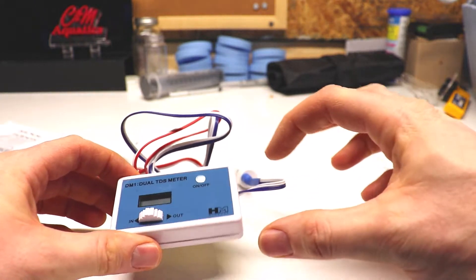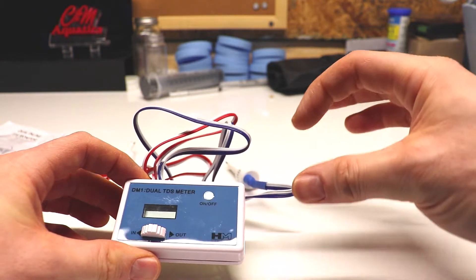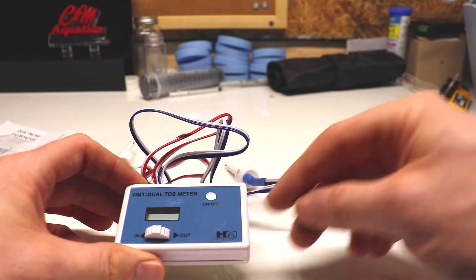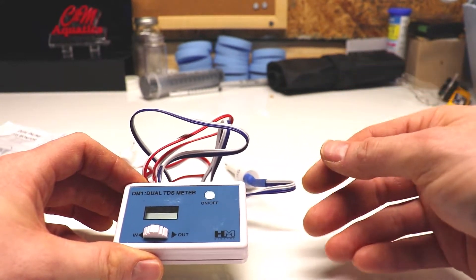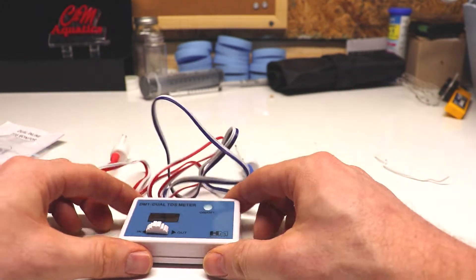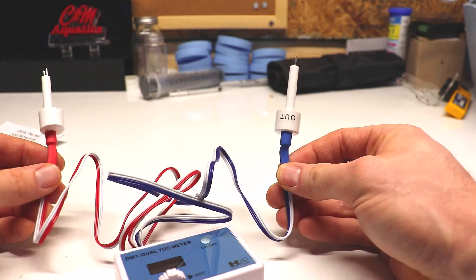It's got a little toggle switch here to switch between in and out. As your filters in your RODI system get clogged up with gunk and get old, your total dissolved solids will increase in your output line. There'll be a ratio to compare the two so you know when to replace your filters.